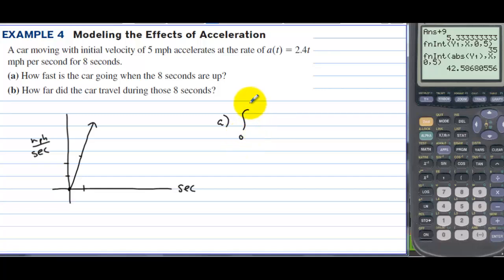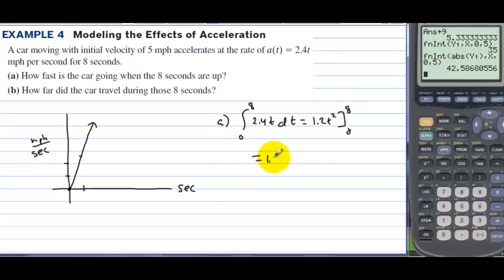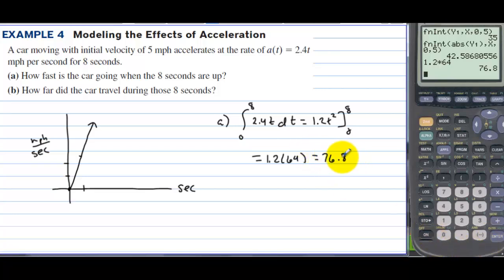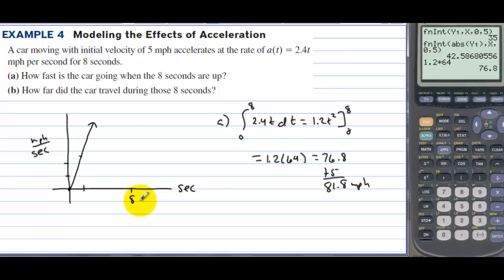For part A, we integrate from 0 to 8 of 2.4t dt. Integrating gives 1.2t squared, evaluated from 0 to 8. That's 1.2 times 64, which equals 76.8. That's the displacement of the velocity. But the car started at 5 miles per hour, so we add 5: the car is going 81.8 miles per hour. The units work out because miles per hour per second times seconds cancels the seconds, leaving miles per hour.